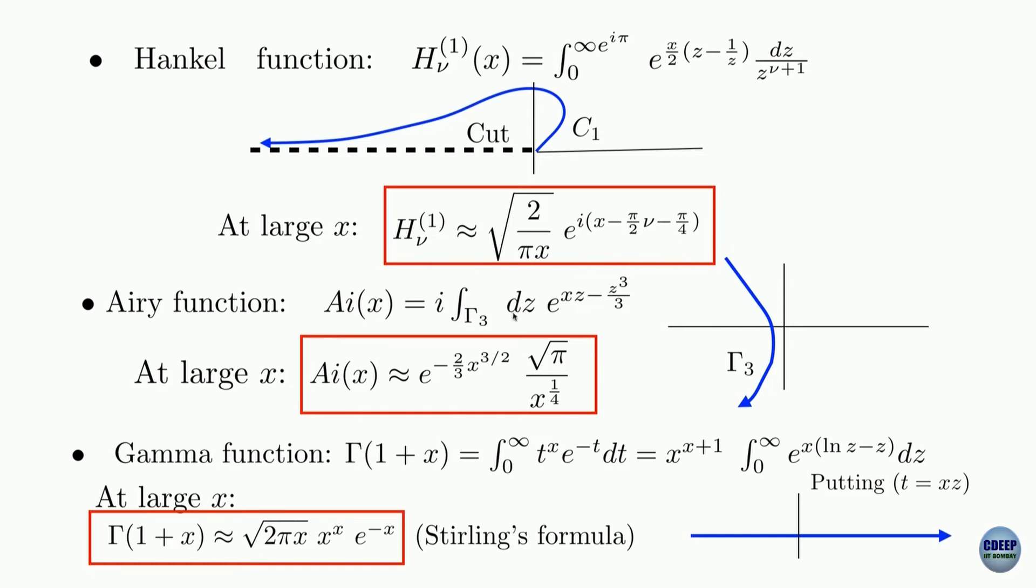But it is a complex integration. The path is this blue path gamma 3 along this gamma 3 path. And what you have here is x z minus z cubed over 3. So if you take x common, you will be left with z minus z cubed over 3x, and that you can call as some g of z. Your f of z here is 1.